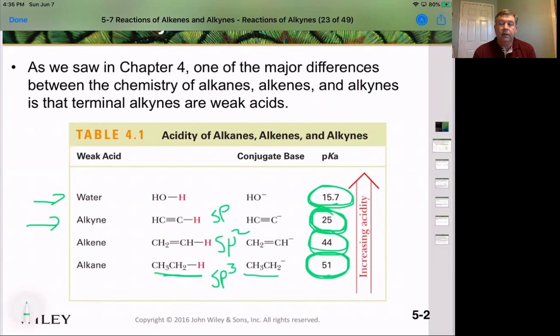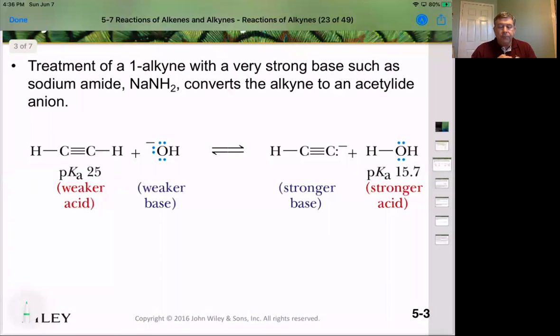The sp character of the triple bond of the alkyne gives it its acidity. Let's think about how we can do this. Most of the time when we deprotonate acetylene, we use something like sodium amide. The reason we use sodium amide is because it's a very strong base. Let's try to remove that proton using something like hydroxide, which we think of as a very strong base in water.